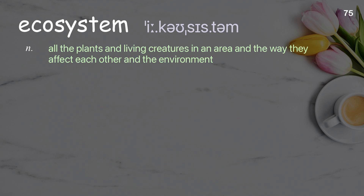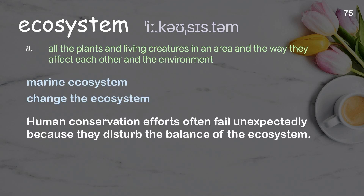Ecosystem: all the plants and living creatures in an area, and the way they affect each other and the environment. Examples: marine ecosystem, change the ecosystem. Human conservation efforts often fail unexpectedly because they disturb the balance of the ecosystem.